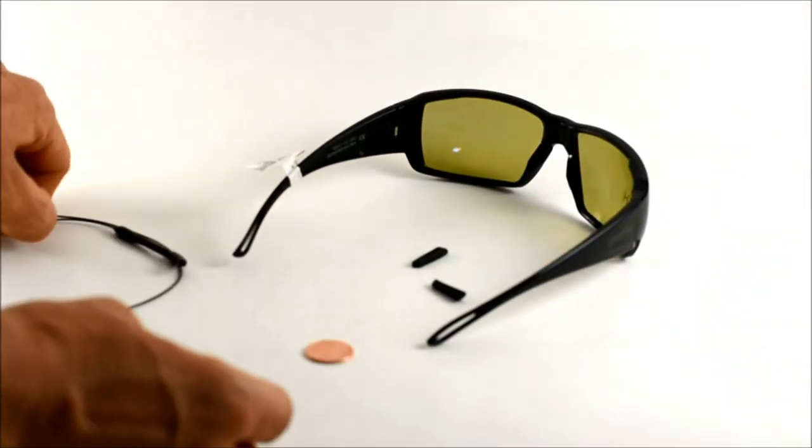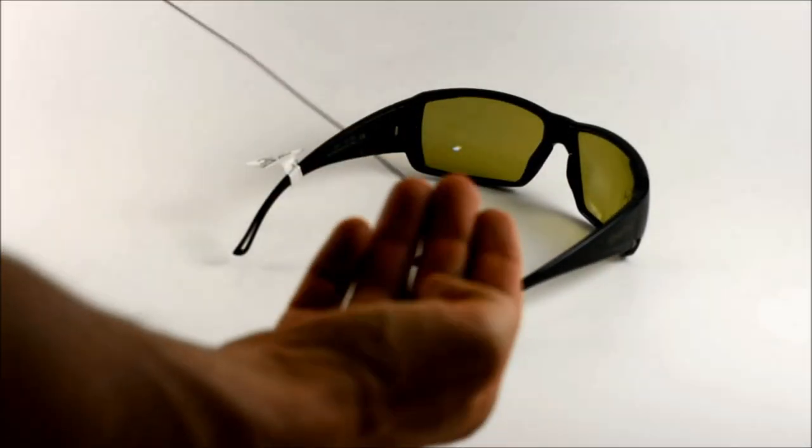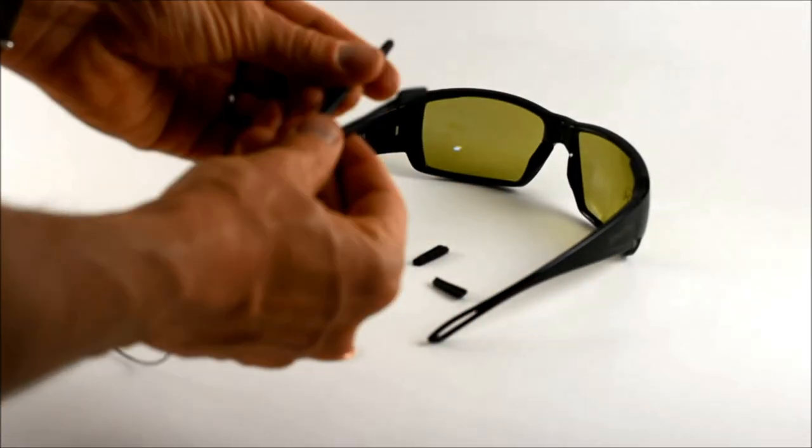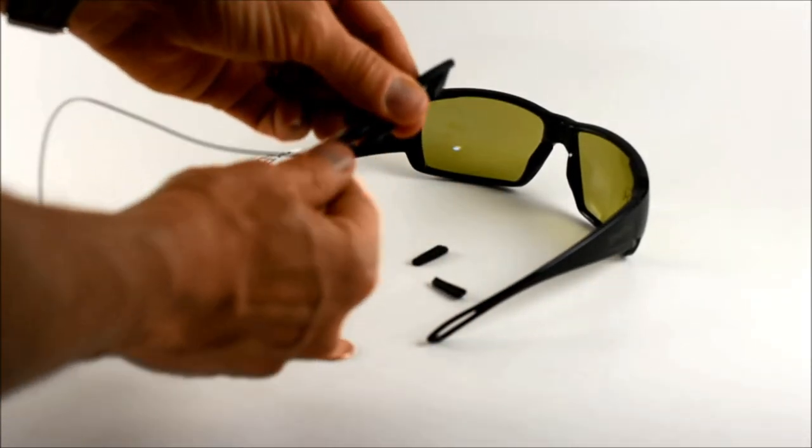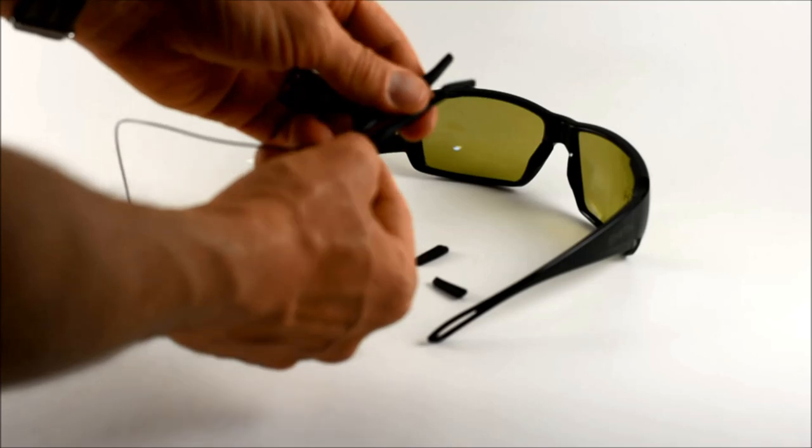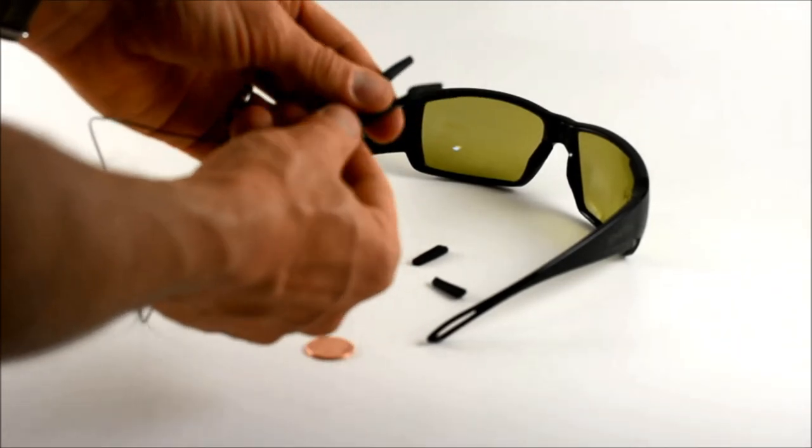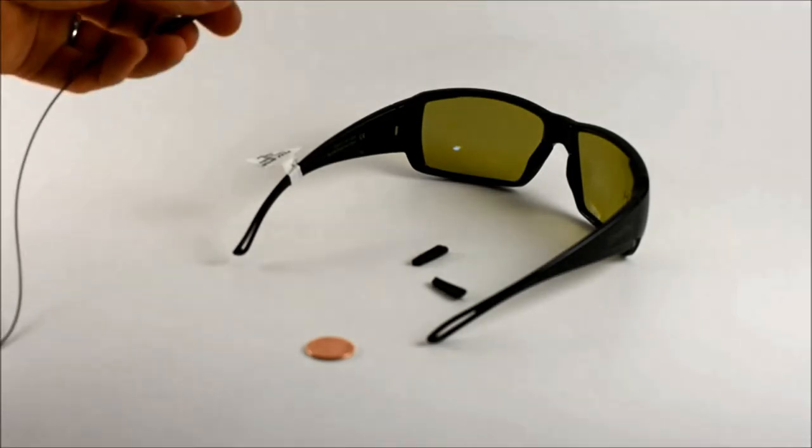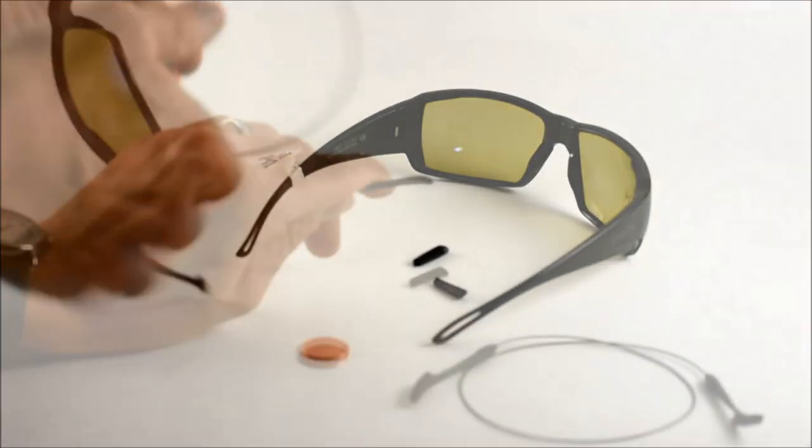So then what you're going to do is grab your retainer, and each side has a left and right side so that refers to your temple. Left and right, obviously left and right temple. So left side is going to be over here, right side over here.